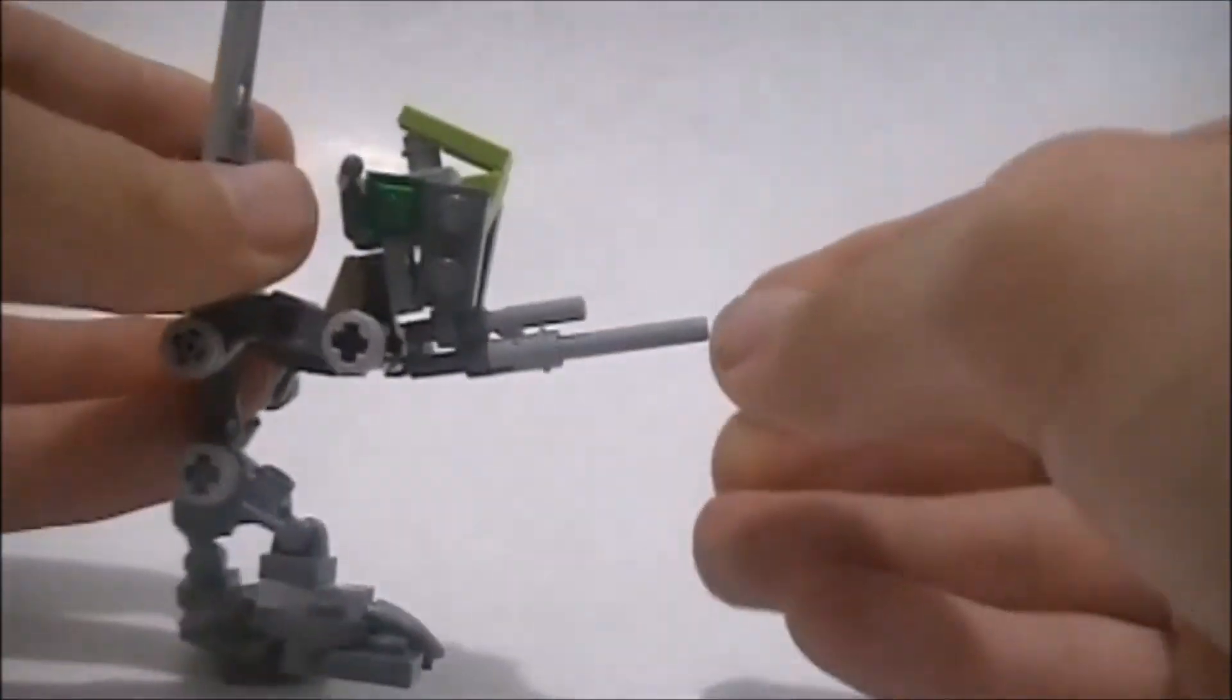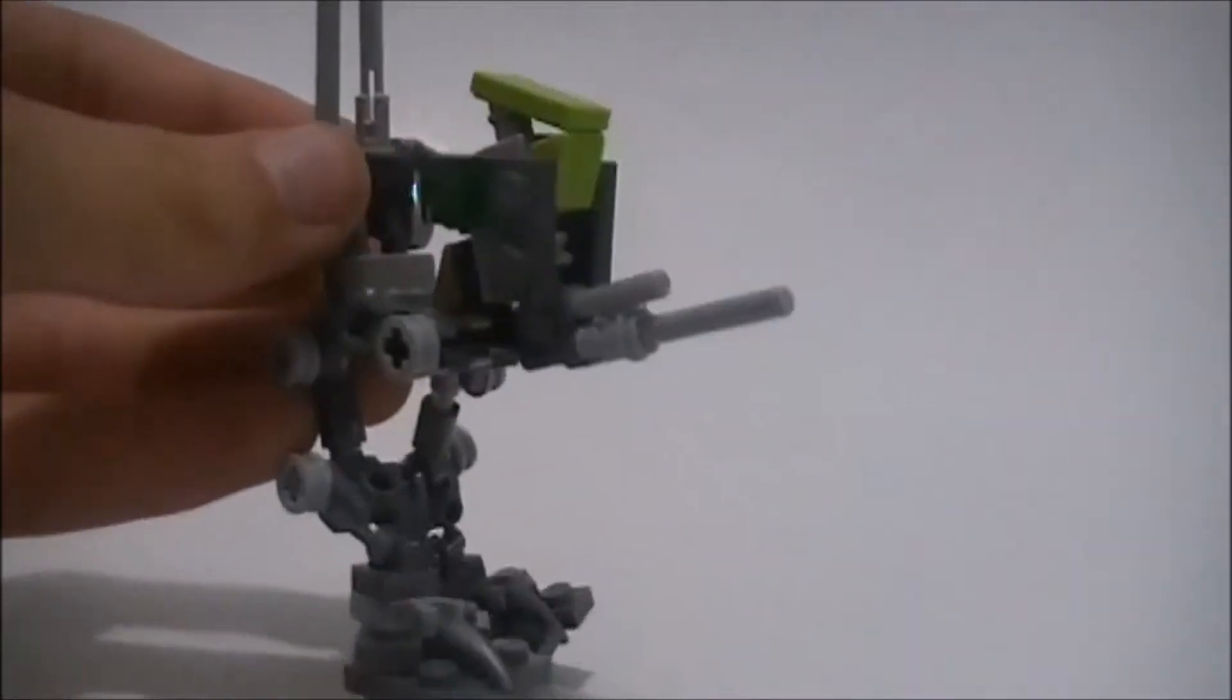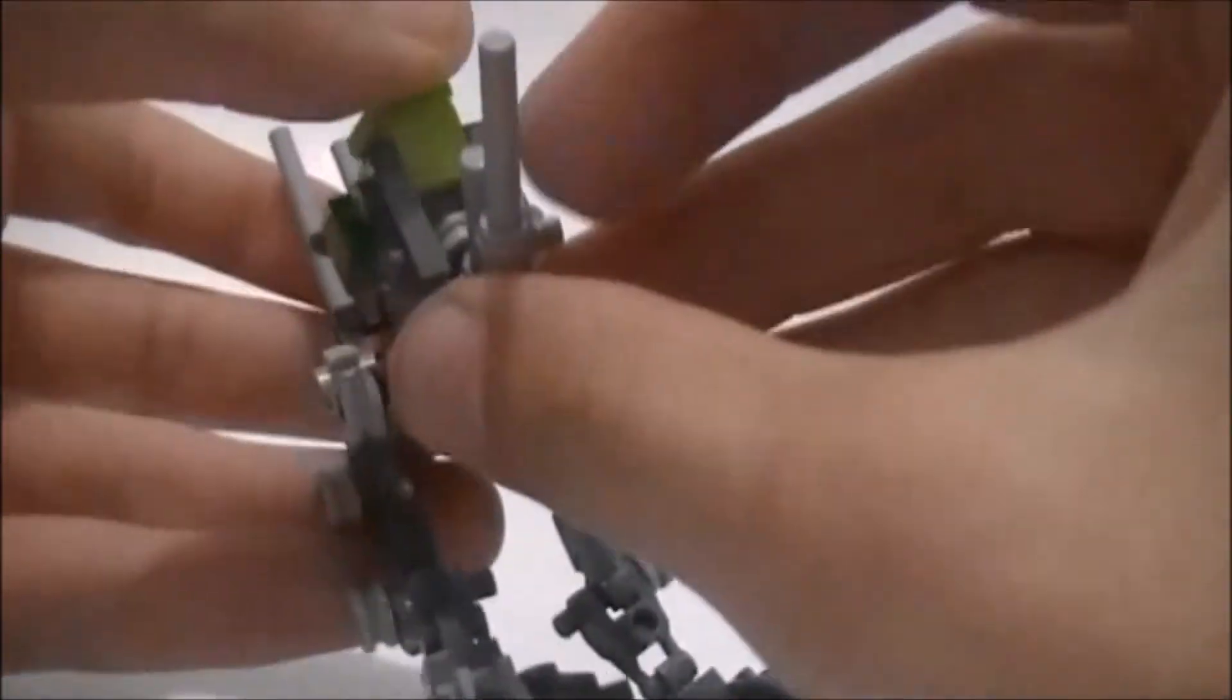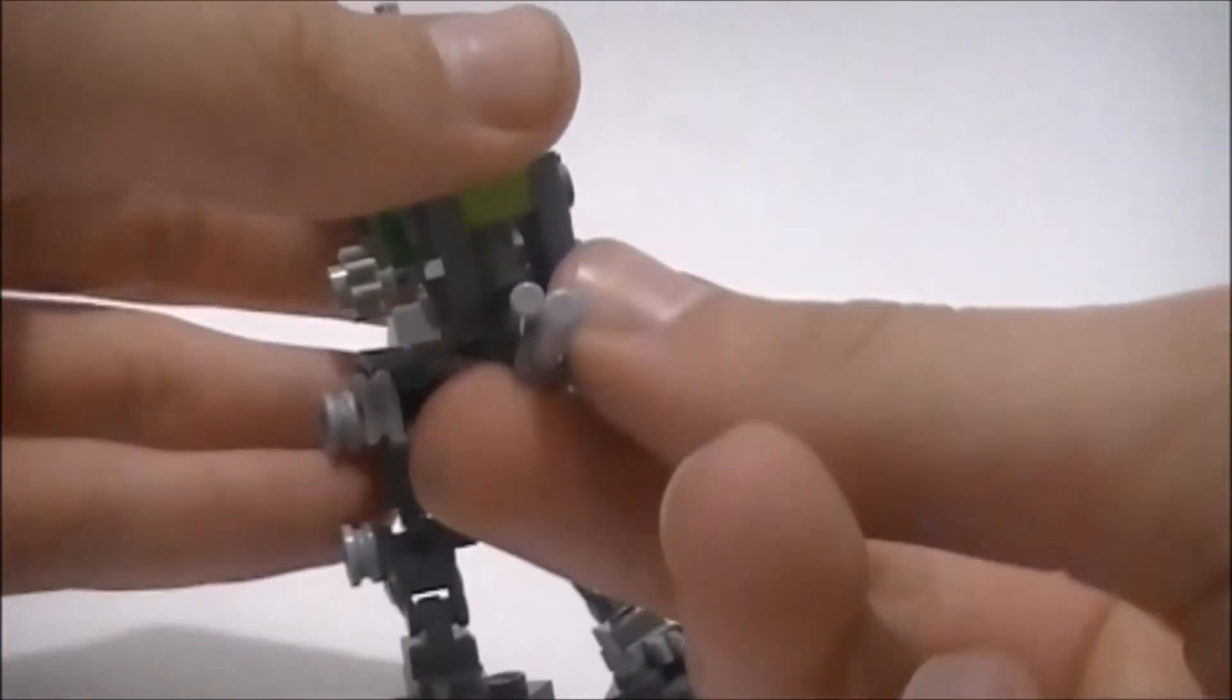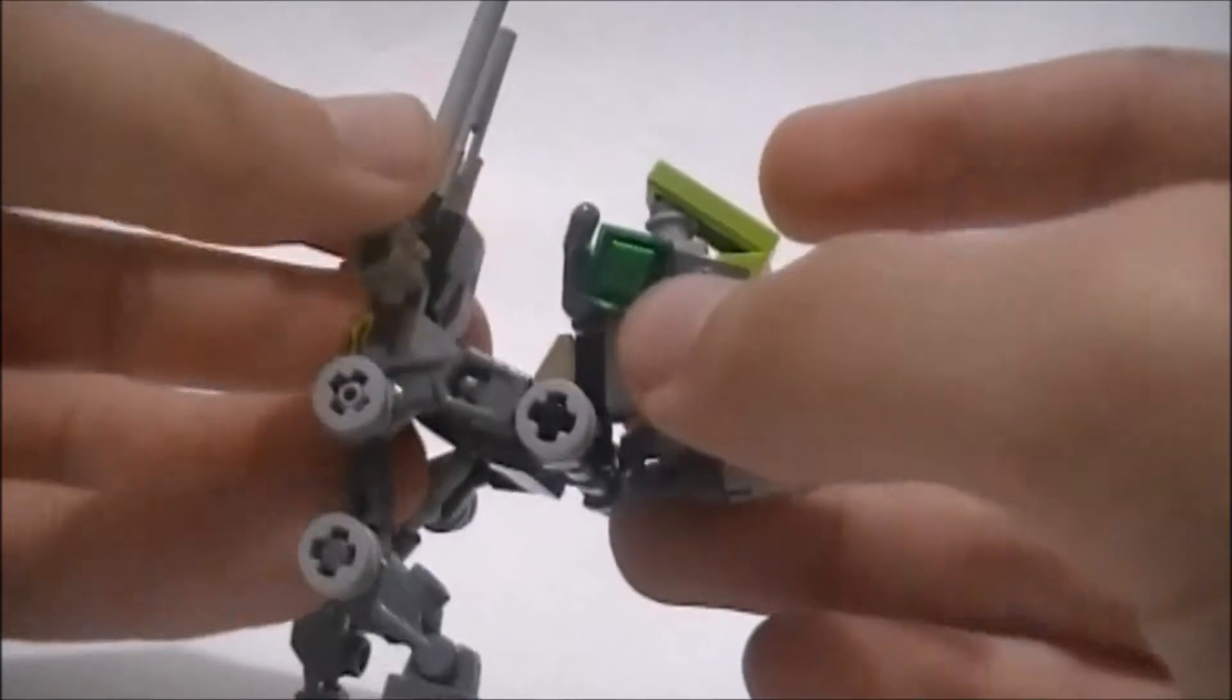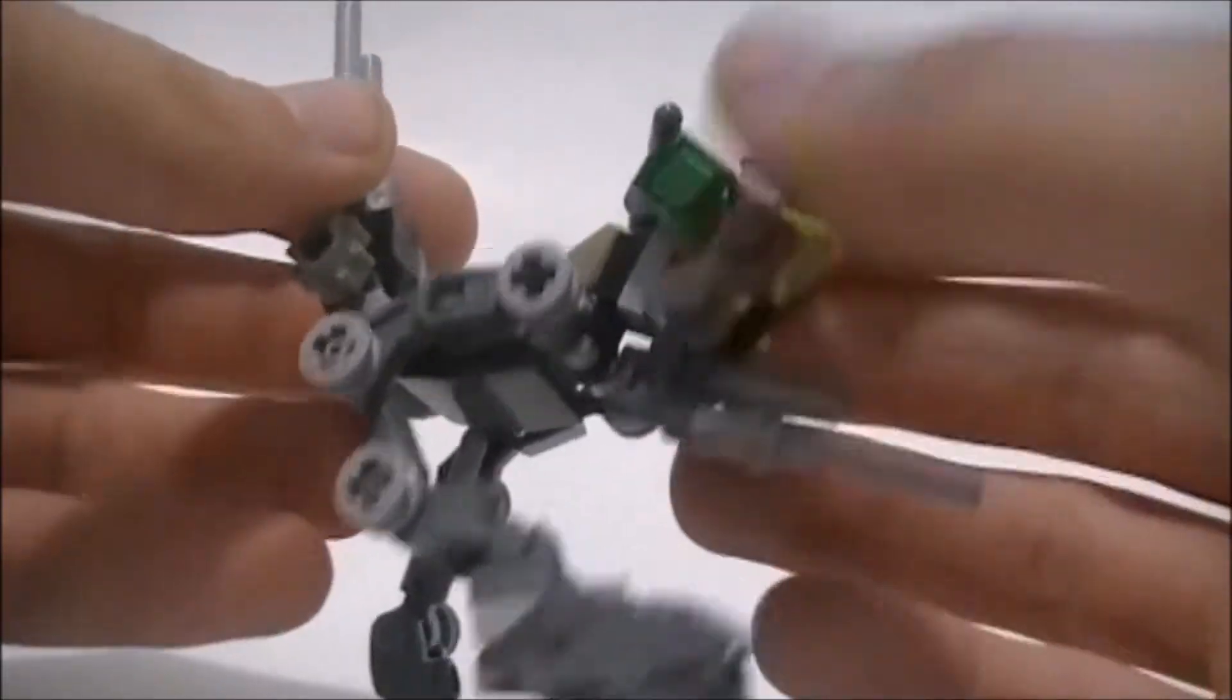Now let's move on to the gun. It's made up of a binoculars piece, a 4L bar, a small pin and a small fire nozzle. Together this clips on and makes a fairly accurate representation.